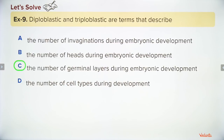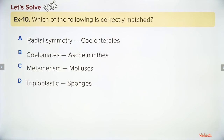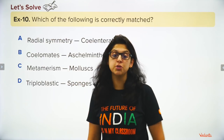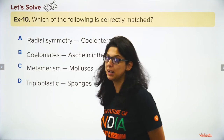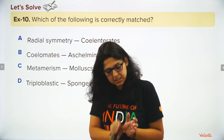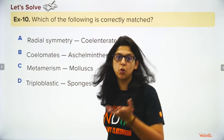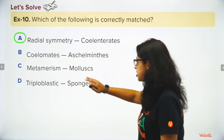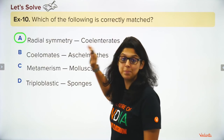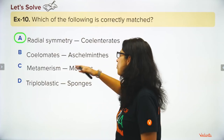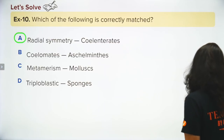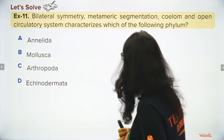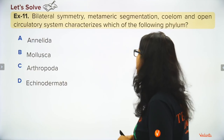Which of the following is correctly matched? Radial symmetry means an organism can be cut from any angle and get equal halves. True coelome is covered with mesoderm. Metameric segmentation means repeated units, like in Annelida. Mollusks have a coelome but lack metameric segmentation. Radial symmetry is found in coelenterates; bilateral symmetry means cutting an organism down the middle gives two equal halves.